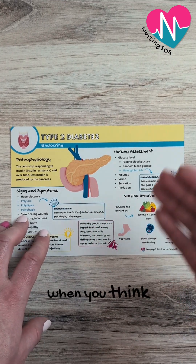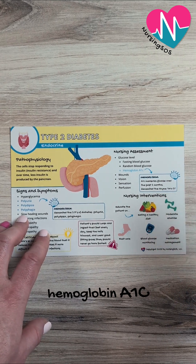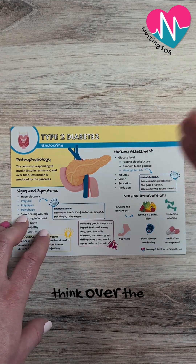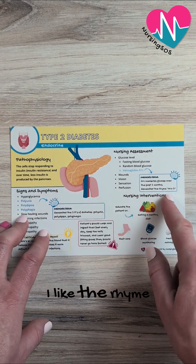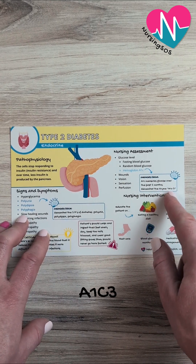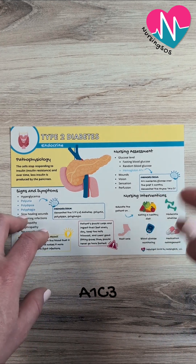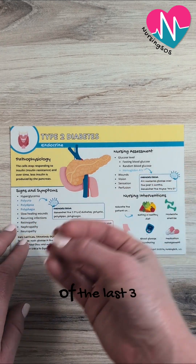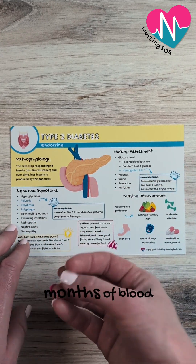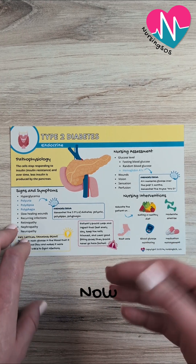So when you think hemoglobin A1c, think over the past three months. I like the rhyme A1c3 — so A1c3, we're doing a look back of the last three months of blood sugar levels.